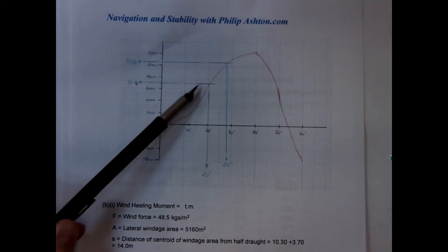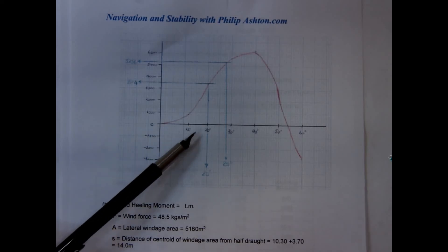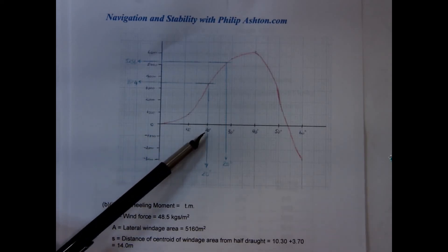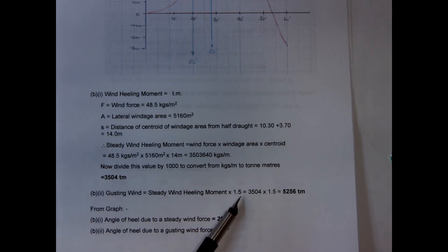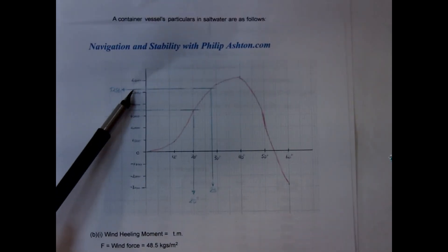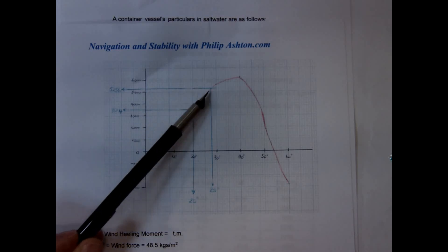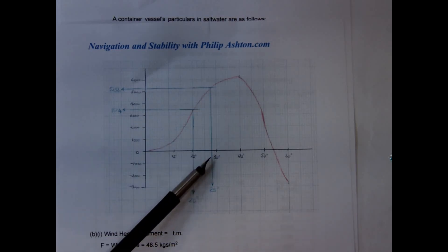We go onto the curve at 3504, come across and down, and we can see the angle of heel is 20 degrees. For the gusting wind, it's simply the steady wind value of 3504 times 1.5, giving 5256. We go to the y-axis at 5256, go across and come down, and the angle of heel is 28 degrees.